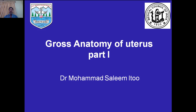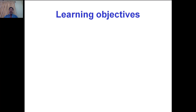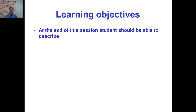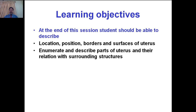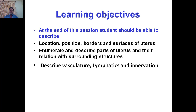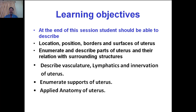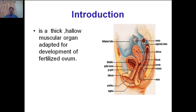Good morning students. Today we are going to discuss gross anatomy of uterus, part one. The learning objectives are: at the end of this session, students should be able to describe location, position, borders and surfaces of uterus; enumerate and describe parts of uterus and their relation with surrounding structures; describe vasculature, lymphatics and innervation of the uterus; enumerate supports of uterus. Applied anatomy of uterus will also be discussed in this session.